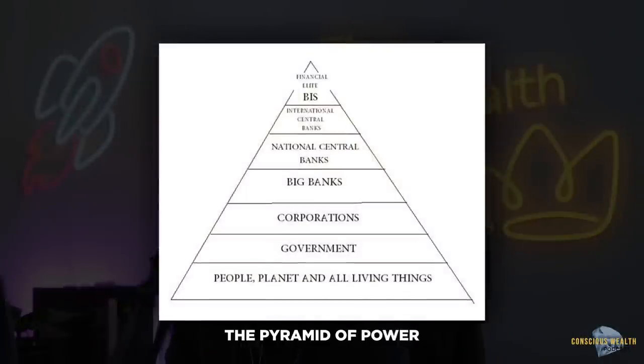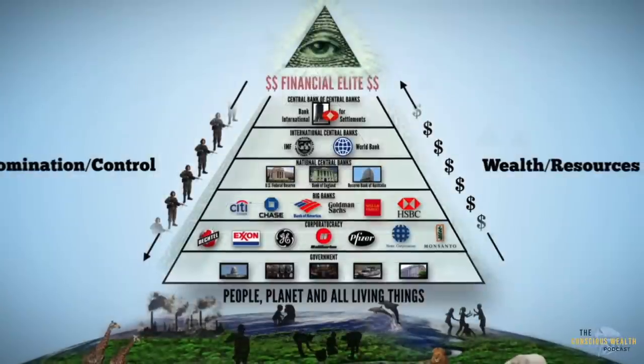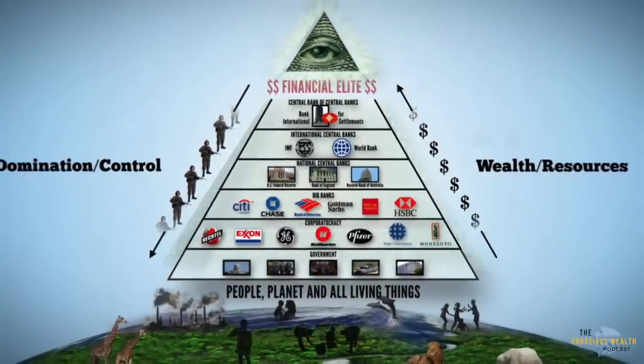These families reside far higher than the government. The political system is just one example of many systems they've infiltrated. Government is very low on the totem pole in terms of power. There's a graph — I think it's by Forrest Gamble — showing the pyramid of power. Government is like the second brick layer from the bottom, just above the people, and then it's government, then the banks, and then it just keeps going up.